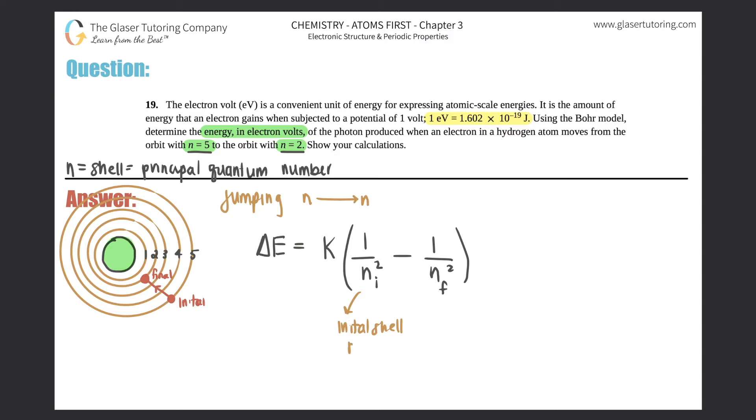n i is the initial shell. So in this case, the initial shell was n equals 5. It started at 5. And then the n final, this is the final shell, it bounced to the n equals 2. So I already know what these two points are, or the two numbers in the formula.